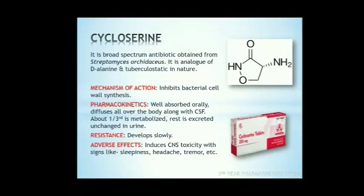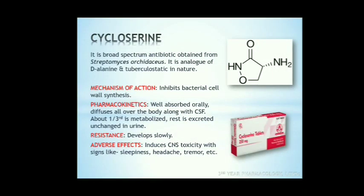Next is cycloserine. Cycloserine is a broad-spectrum antibiotic obtained from Streptomyces orchidaceus. It is an analog of D-alanine and tuberculostatic in nature. It inhibits bacterial cell wall synthesis. It is well-absorbed orally and diffuses all over the body including CSF; CSF concentration equals plasma concentration. About one-third is metabolized and the rest is excreted unchanged in urine. Resistance develops slowly. Adverse effects include CNS toxicity with signs like sleepiness, headache, tremor, etc.